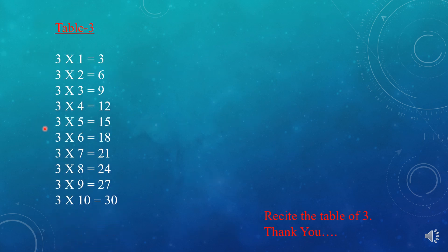Now we will recite the table of 3: 3 ones are 3, 3 twos are 6, 3 threes are 9, 3 fours are 12, 3 fives are 15, 3 sixes are 18, 3 sevens are 21, 3 eights are 24, 3 nines are 27, 3 tens are 30. At home, you will recite the table of 2 and table of 3, and also number names 1 to 100. Take care children, stay at home and stay safe. Thank you for watching.